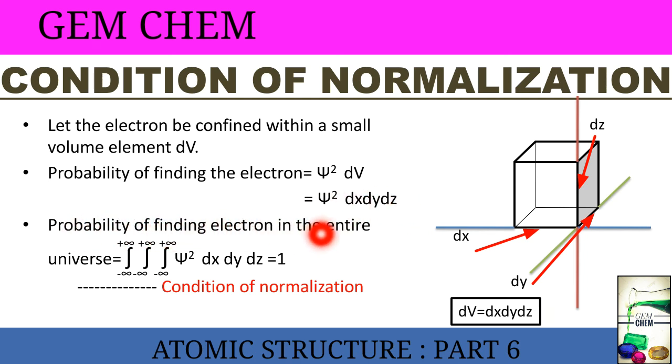The probability of finding an electron in the entire universe will be the integration of all three axes in x direction, y direction, and z direction. It extends from minus infinity to plus infinity. So we have taken the integration for summing up all portions. That is ∫∫∫ Ψ² dx dy dz from -∞ to +∞, which equals 1. We know that total probability is 1. From here we get the condition of normalization to be this integration equals 1.